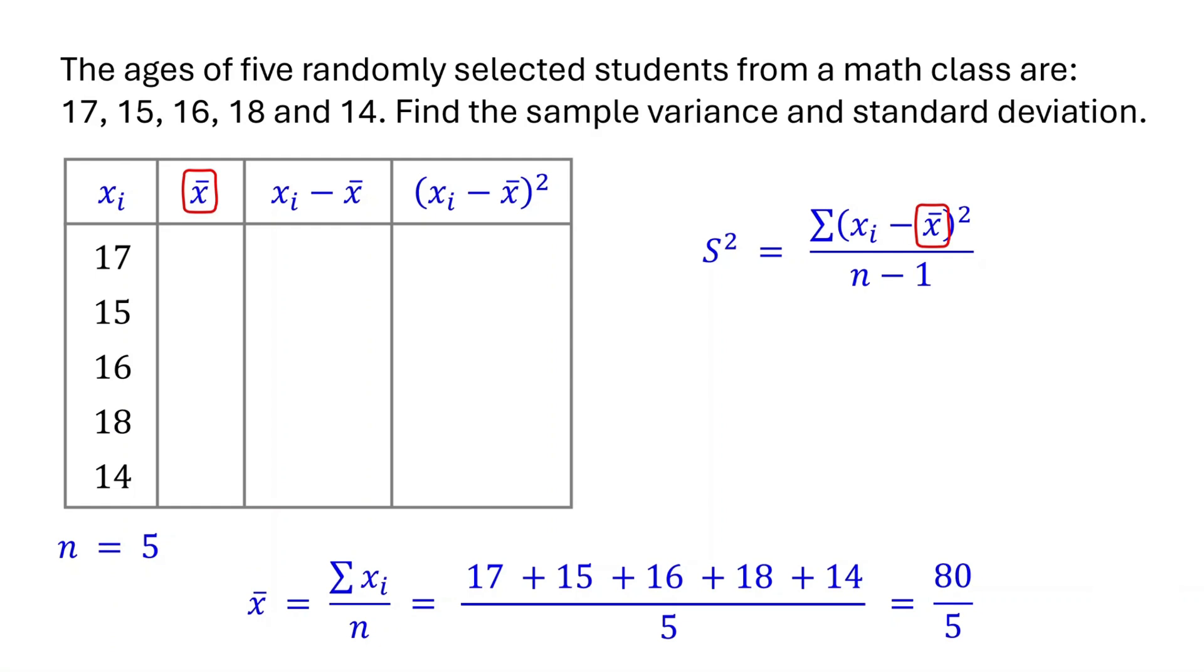The sum of these numbers is 80. Feel free to use a calculator if needed. 80 divided by 5 is 16. Therefore, the sample mean is 16. Now, write down 16 in the second column of the table.